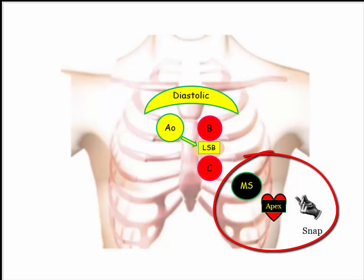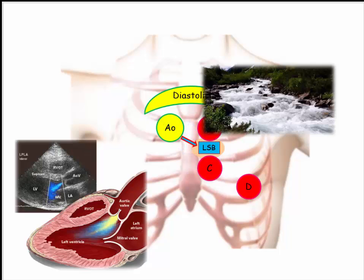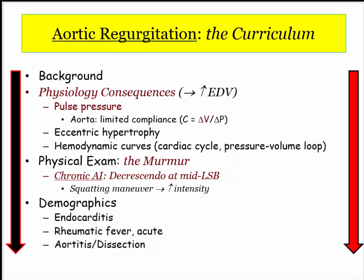We will compare and contrast these two again later on. The murmur of chronic aortic insufficiency is best heard radiating toward the left sternal border, and this reflects the direction of blood flow as a result of valvular insufficiency. With that brief background, let's launch our discussion.